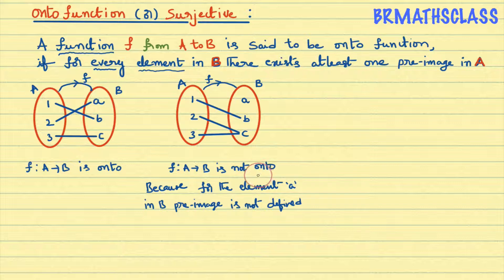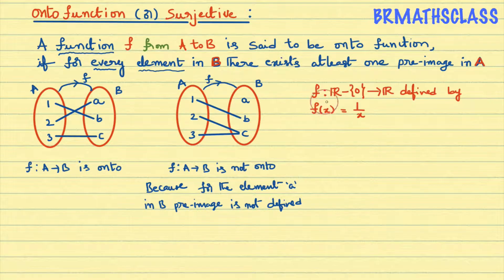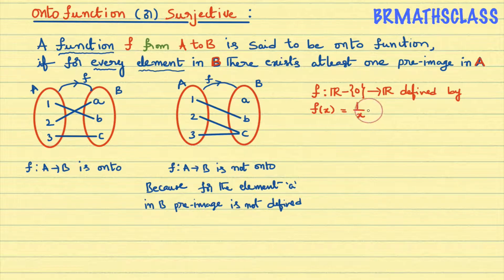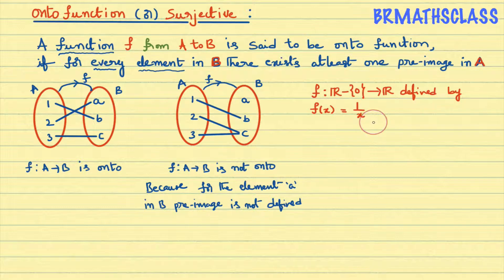The third example is very important — please don't miss it. The function is defined from the set of all real numbers except zero to all real numbers. Domain is all real numbers except zero, codomain is all real numbers. It is defined as f(x) = 1/x.